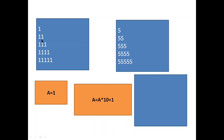How is this pattern printed? First of all, understand that the first time we are printing one, so we keep a equals to one — a numeric variable equals to one. We can simply print that. But next time I want to print 11, so how can we get 11 from 1? We need a formula. The formula is: a equals to a into ten plus one. So a is one, one into ten is ten, plus one is eleven.